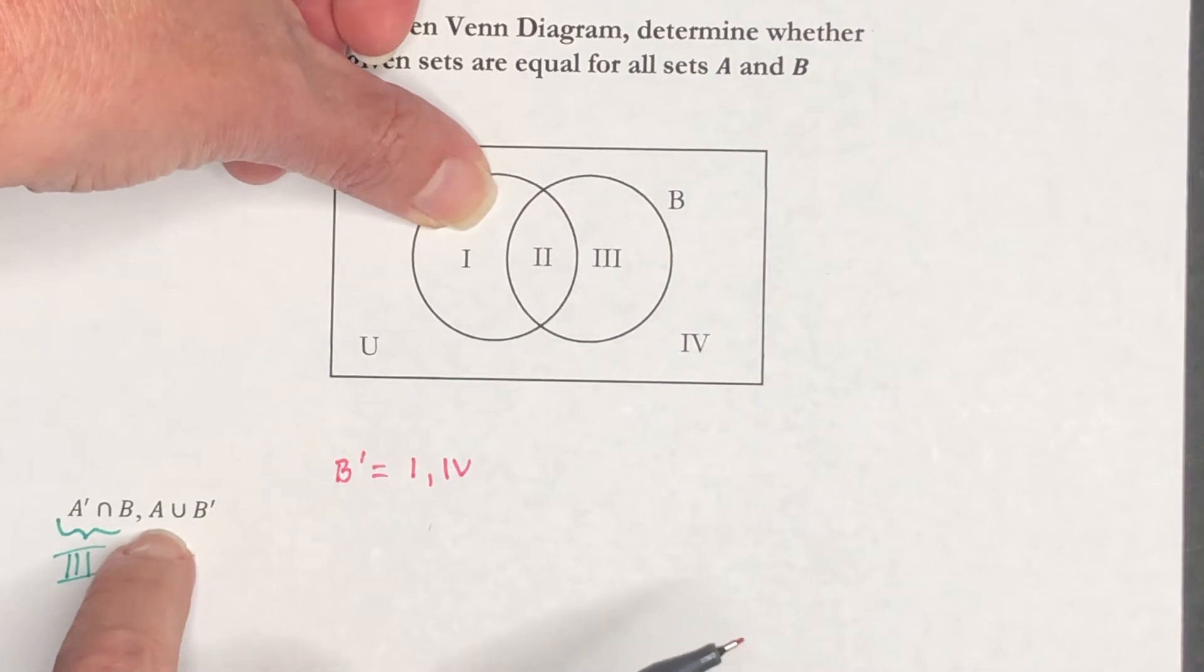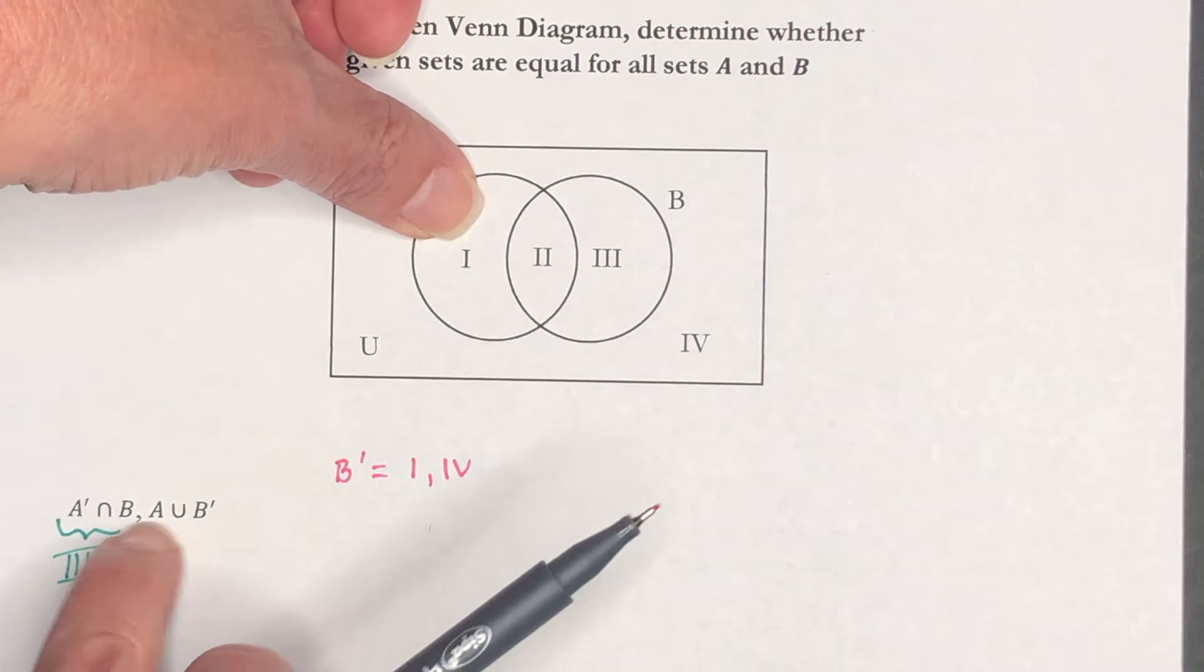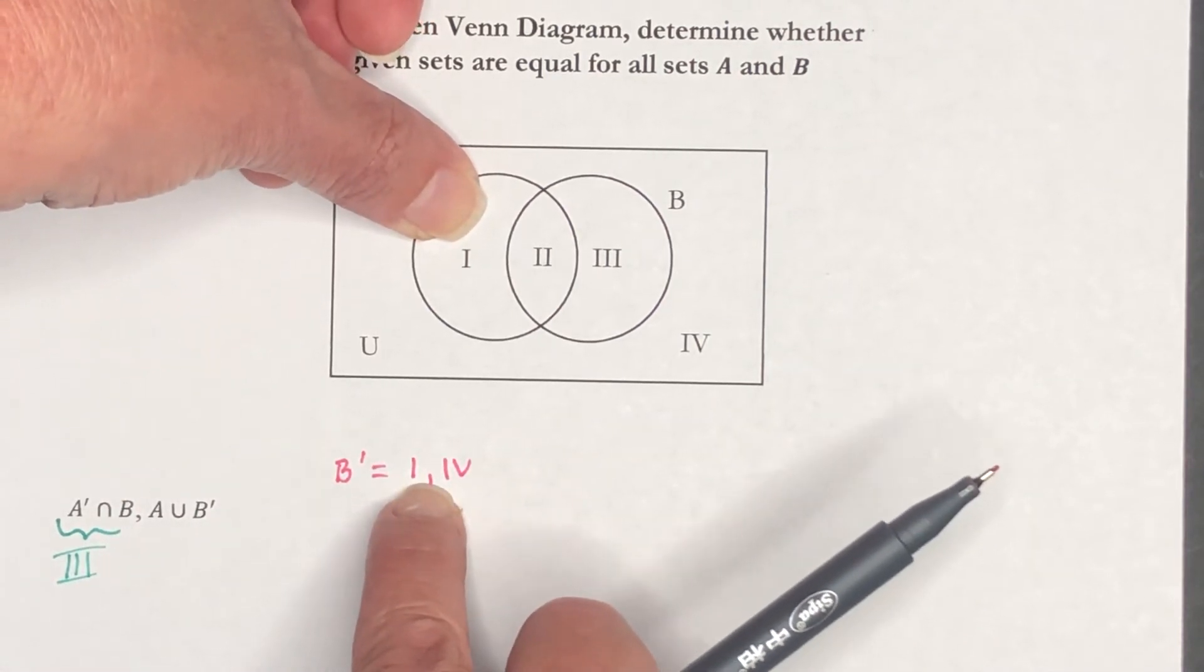Now here we want to union this with A. So that means I want to pick up everything that is in A, or that is in B complement, or that is in both.